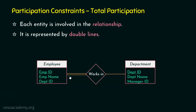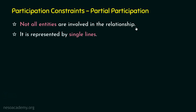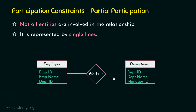What about department? There can be a department that has no employees — think of a newly created department. In that case, the department entity exists without an employee, so department participates in this relationship as partial participation. Partial participation means not all entities are involved in the relationship, and it is represented by single lines. So here we have total participation from employee and partial participation from department.